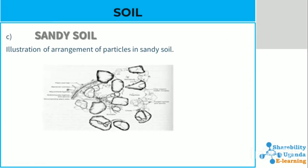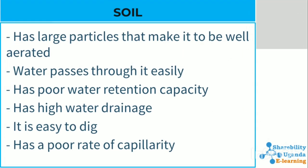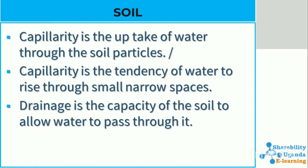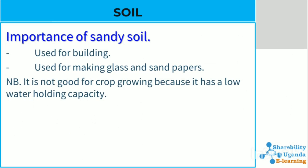Sand soil particles are loosely packed, not closely packed like the other types of soil. It has large particles that make it well aerated. Water passes through it easily and it has poor water retention capacity and higher water drainage. It is easy to dig and has a poor rate of capillarity. Capillarity is the tendency of water to rise through small narrow spaces. Drainage is the capacity of the soil to allow water to pass through it. Importances of sand soil: it is used for building, used for making glass and sandpapers. It is not good for crop growing because it has low water holding capacity.